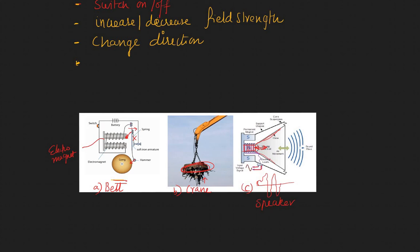You don't need to know all the working details, but it's good enough if you have a feel for how these are examples of electromagnets. I'll see you in the next video where we talk about some applications of this magnetic field produced by current, in the form of a motor and other things. See you then, bye.